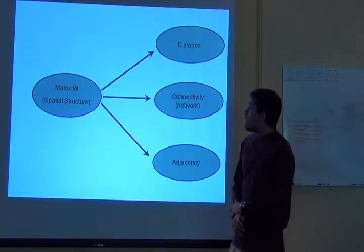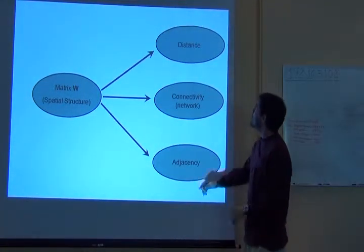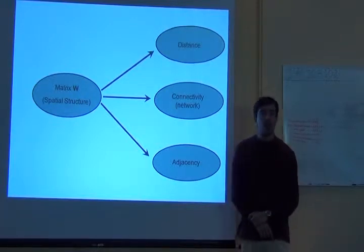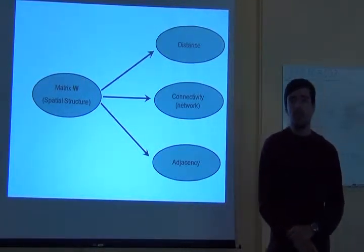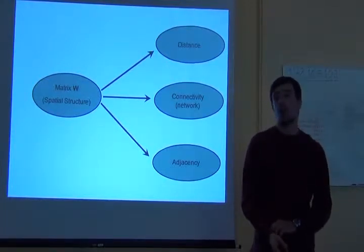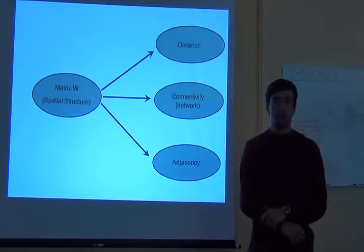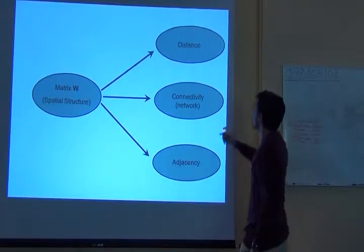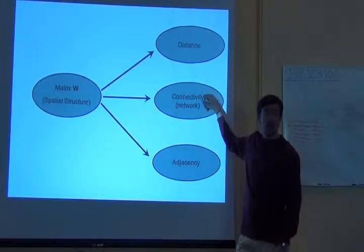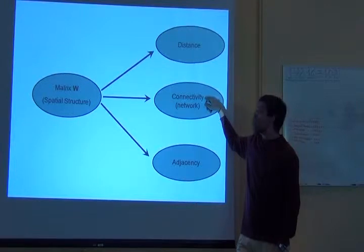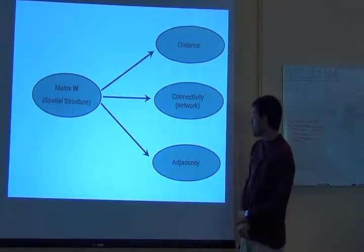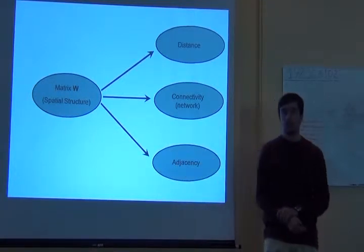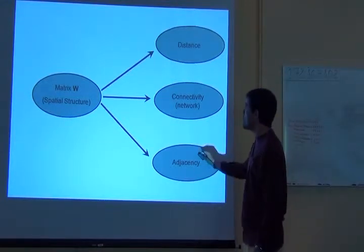So this matrix of spatial structure, the matrix W, it can measure distance like we had in the road atlas. It can measure connectivity if things are related to another one. For example, I have strong evidence that this particular species doesn't travel more than 100 kilometers from the birth site. So the species is not affecting anything else other than 100 kilometers. So I can create a connectivity matrix that says that cells are related to each other up to 100 kilometers. So that will be a distance matrix that is transformed. Or I can just say whatever is neighbor of what, so just the nearest adjacency. But these are all matrix of spatial relationships.